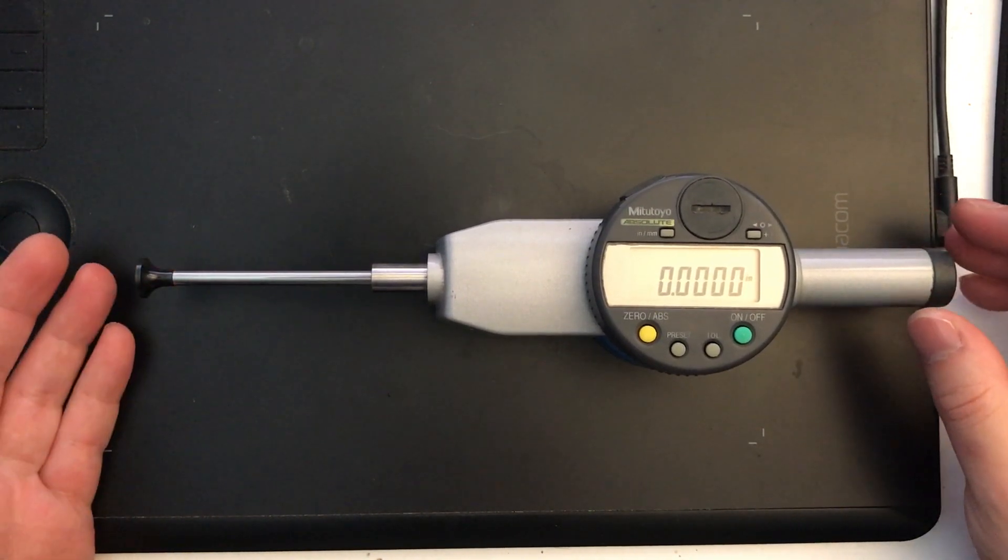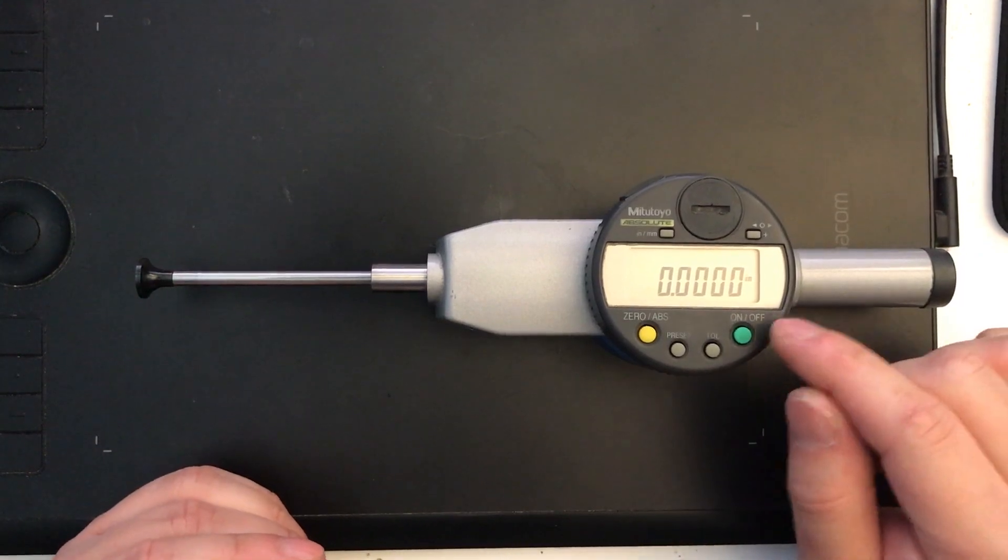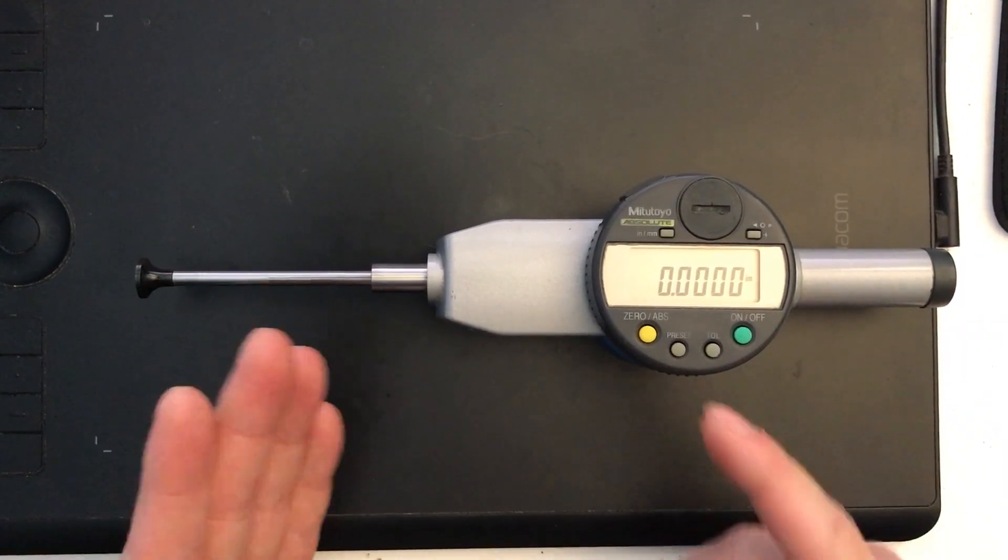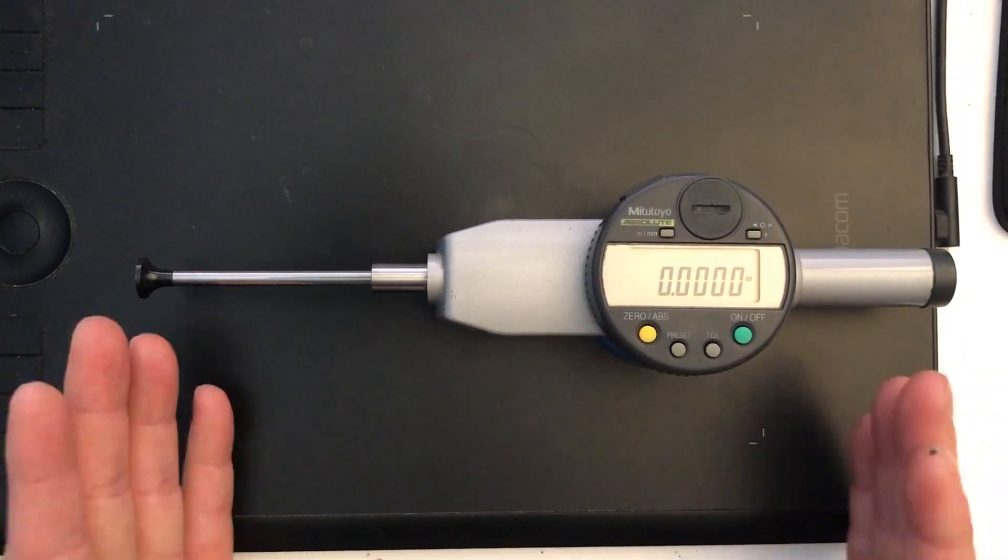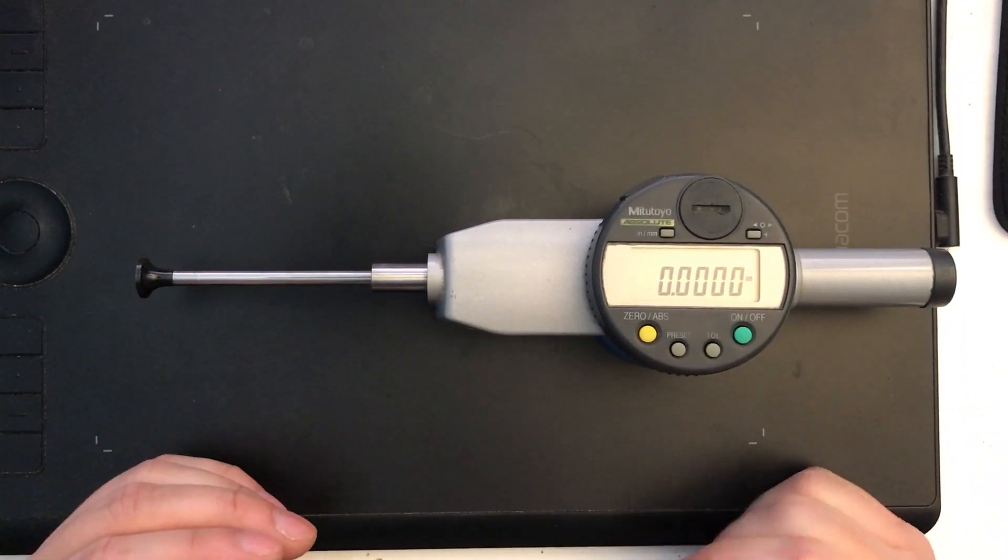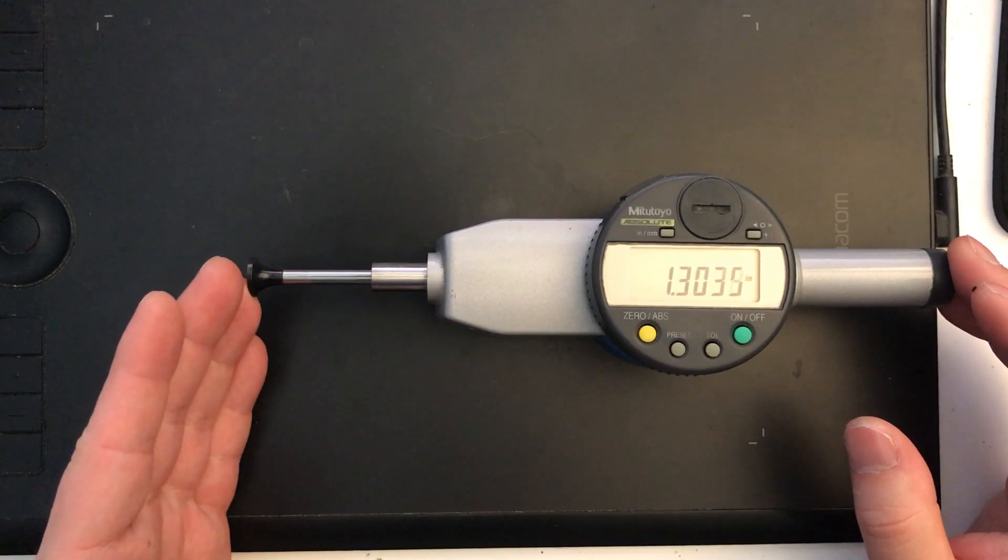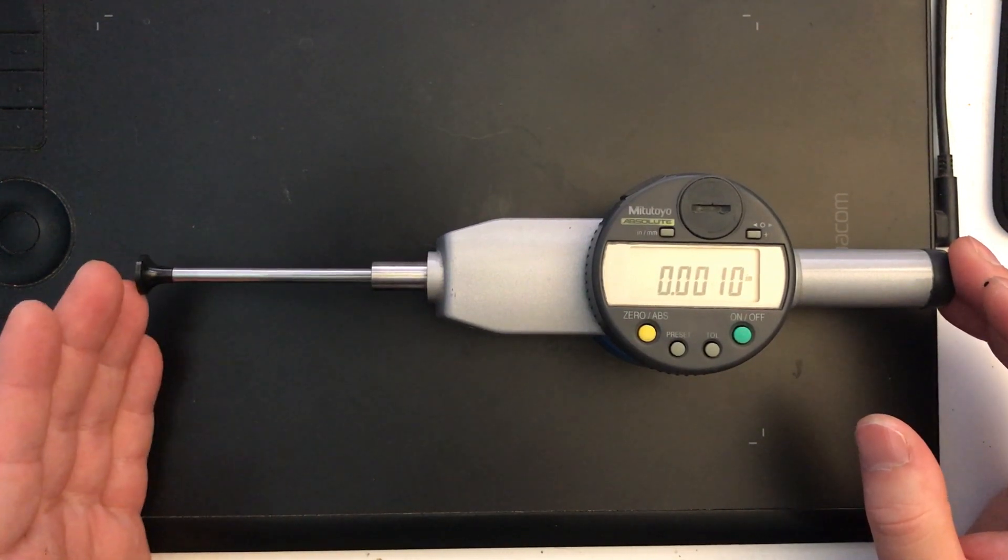So right off the bat, you'll notice that there's nothing on display on the screen except for the digits. This is what they call the absolute mode. Essentially when you put the battery in this thing and you zero it, this is what the indicator thinks is zero. So anything you do from that zero portion will read up and so forth like that.